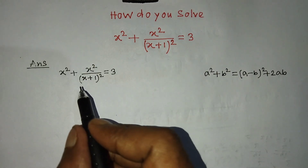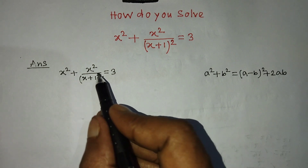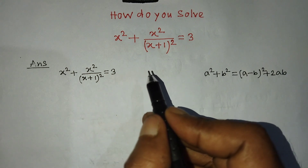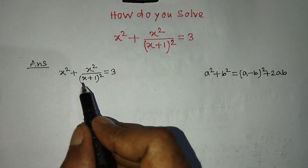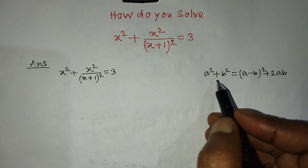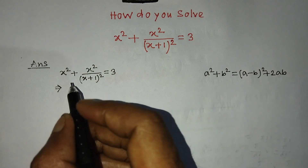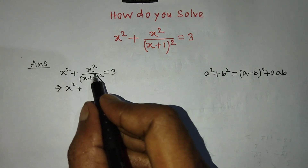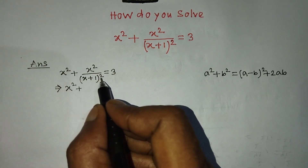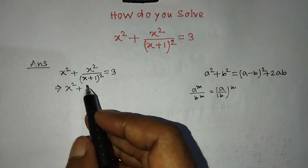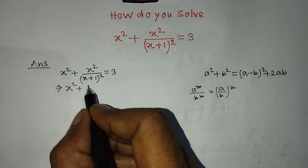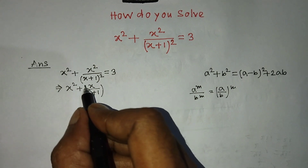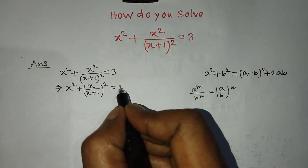Our given equation is x squared plus x squared over (x plus 1) whole squared is equal to 3. To find the value of x, we have to arrange the left hand side of this equation in the form of a squared plus b squared. We have to apply this formula and write x divided by (x plus 1) whole to the power 2 is equal to 3.